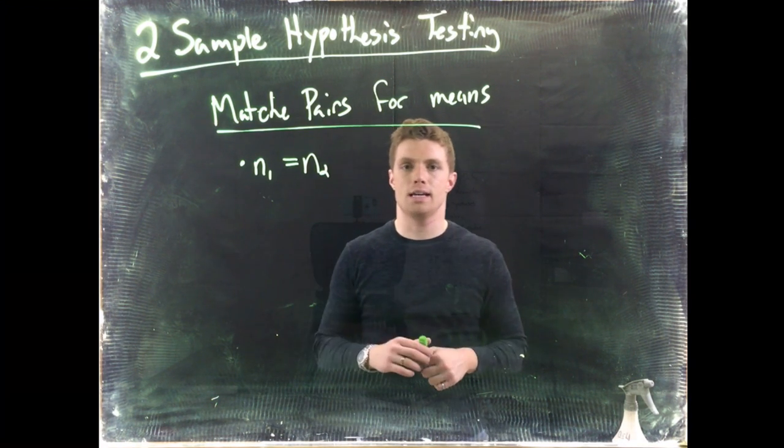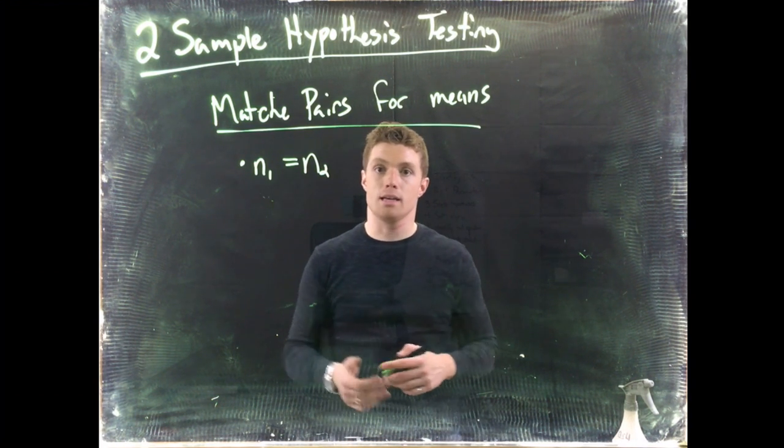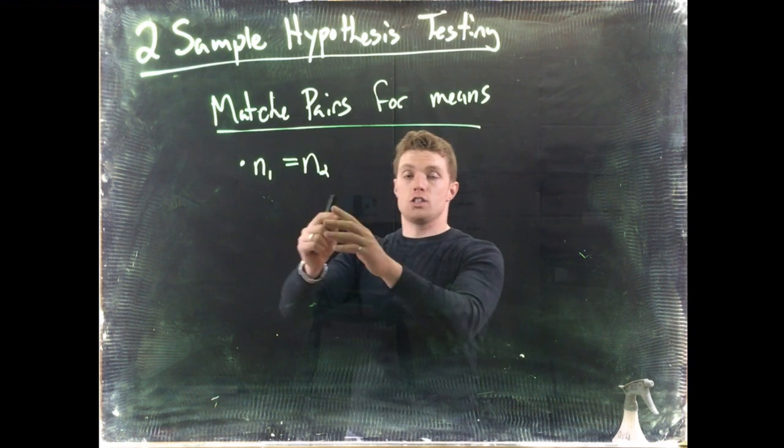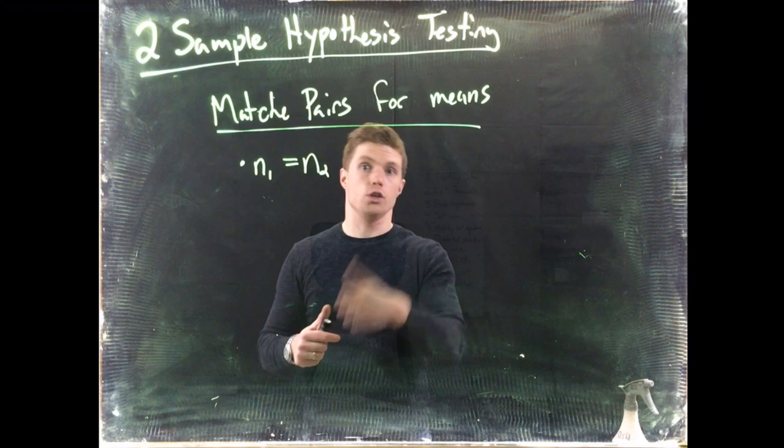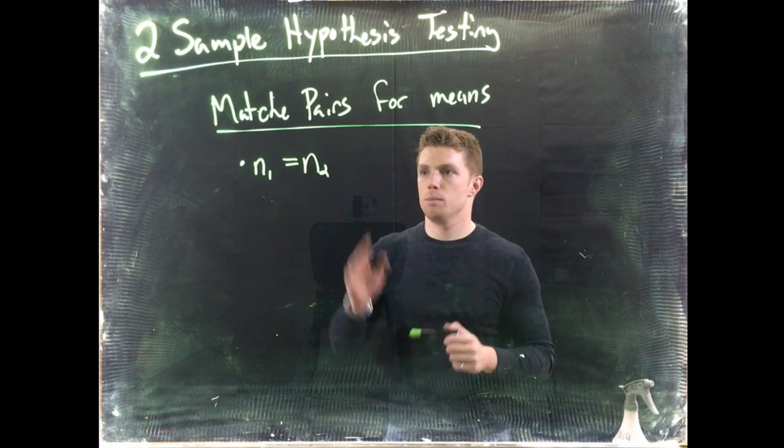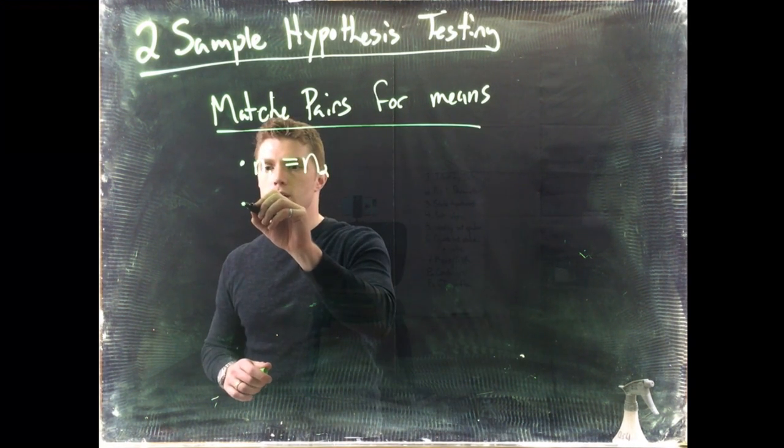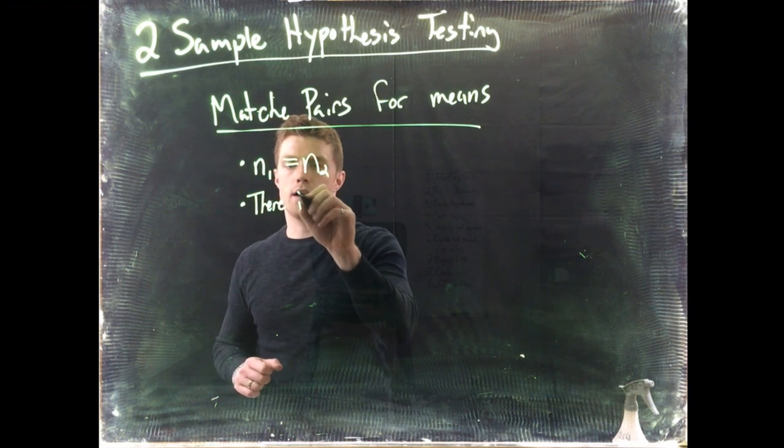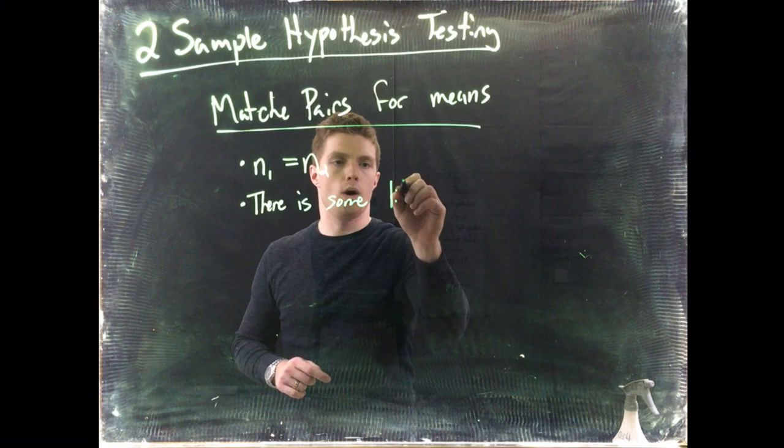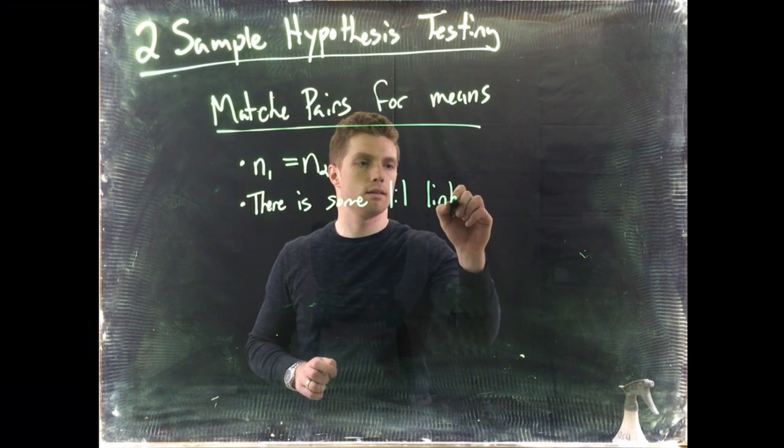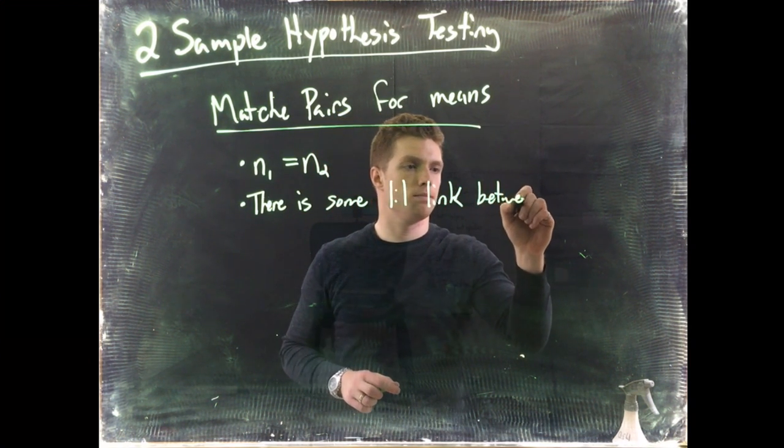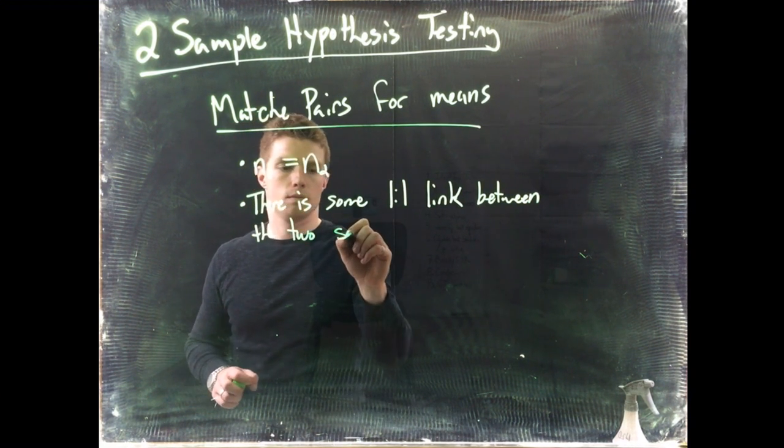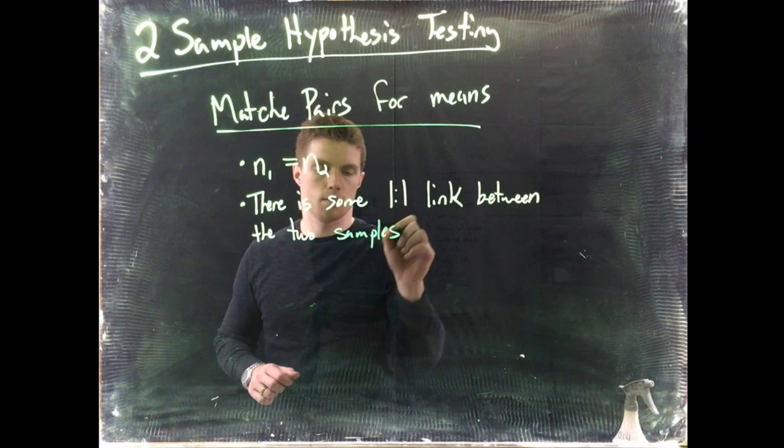But just because they're the same size does not mean that they are matched pairs. Plenty of times we have equal sample sizes and we wind up doing like our two independent t-tests for the mean. So this is just kind of step one. If they are the same, then we want to check something else. We need to see that there is some one-to-one link between the two samples.